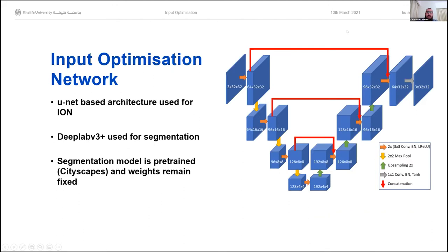Our approach is based on a U-Net style architecture — an encoder-decoder network with consecutively smaller but deeper feature maps. At each level of the encoder, we add the data back into the decoder so that we maintain high-resolution, high-frequency data that could be lost due to downsampling operations. We're targeting a trained DeepLab segmentation model, which is a common model for semantic segmentation, trained in our case on the Cityscapes autonomous driving dataset.